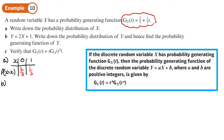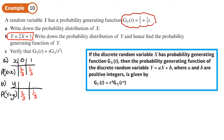Part B: Y = 2X + 1. Write down the probability distribution of Y. With this type of problem, only the outcomes change — not the probabilities. So the probabilities are still 2/3 and 1/3. The outcomes of X get multiplied by 2 and then add 1: 2×0 + 1 = 1, and 2×1 + 1 = 3. So the outcomes for Y are 1 and 3.